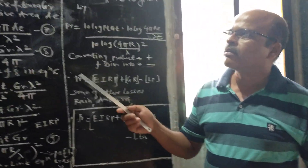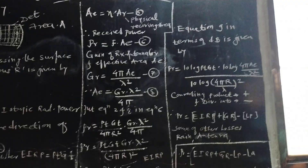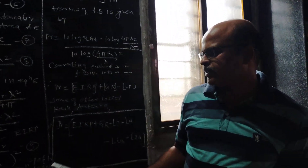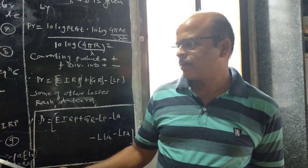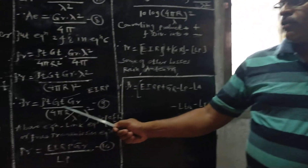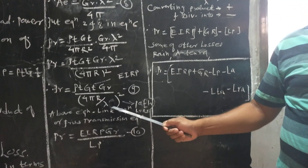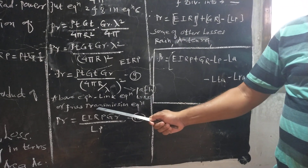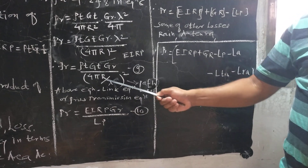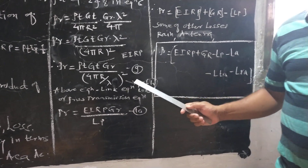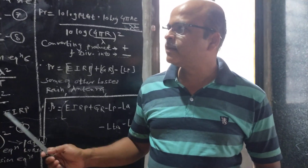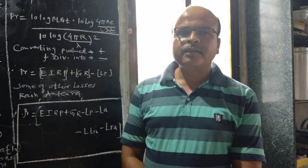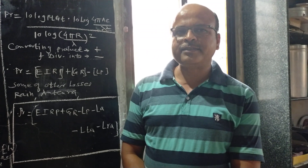So, this is the basic transmission theory equation. In this, we have derived the equation PR = PT·GT·GR / (4πR/λ)², which is also called the Friis Transmission Equation or the Friis Free Space Equation. We have derived this equation in detail, and it is useful in satellite uplink and downlink design.